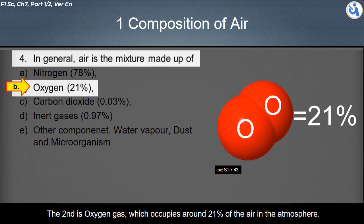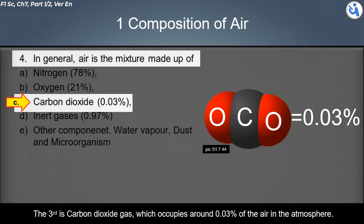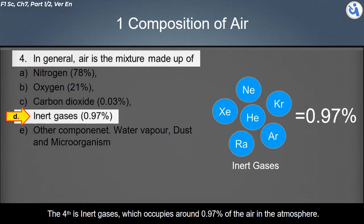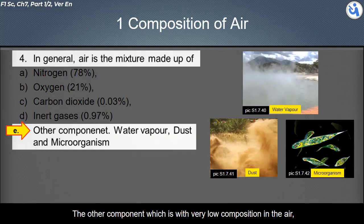The third is carbon dioxide gas, which occupies around 0.03% of the air in the atmosphere. The fourth is inert gases, which occupy around 0.97% of the air in the atmosphere.